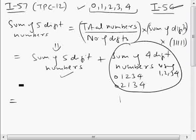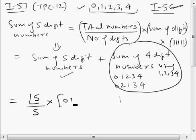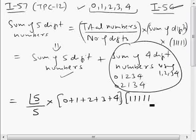So let's do this: we apply this formula. Total numbers that can be formed with the help of these 5 digits is 5 factorial — we are assuming 0 as non-zero, assuming 0 can come at the first place — divided by number of digits (5), multiplied by sum of digits, multiplied by the sum of place values. This gives us the sum of 5-digit numbers plus sum of 4-digit numbers, as we discussed.